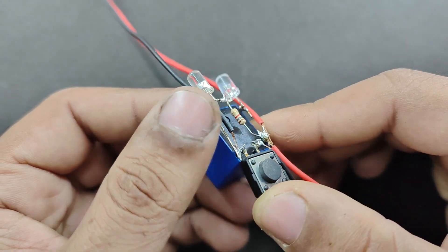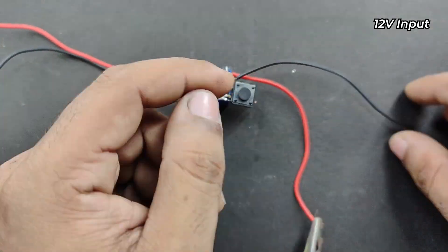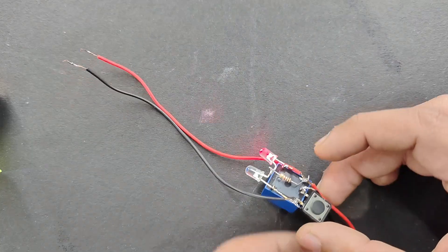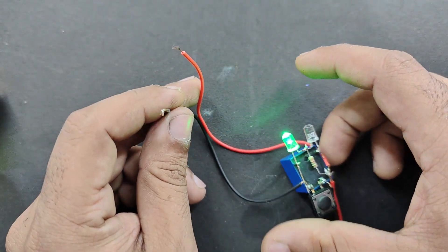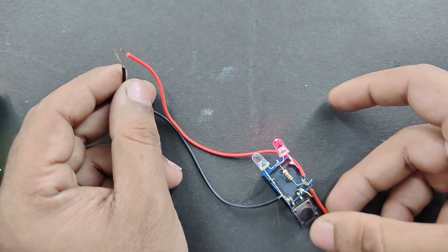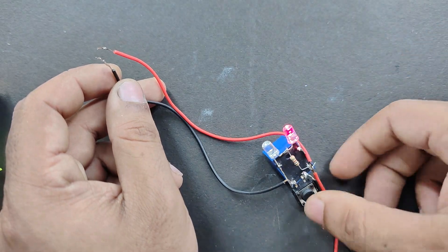So our circuit is now complete. Let us test it and see whether it's working. Here you can clearly see that the circuit is tripping while we short it to positive.